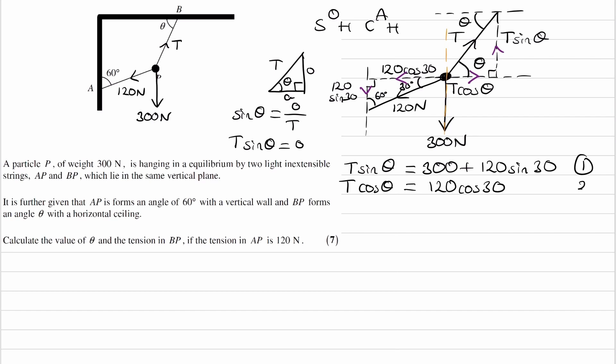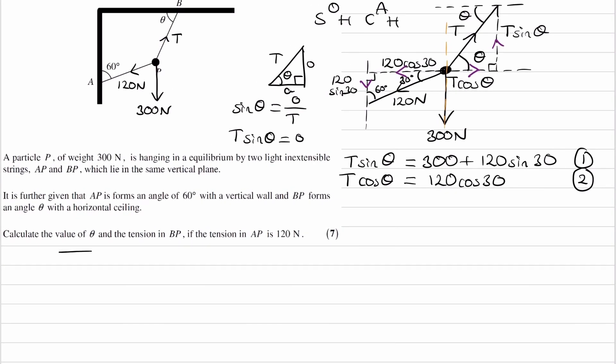So those are our two equations, and from these two, we're going to be solving them simultaneously to work out what theta is and to work out what tension T is. The easiest way that we can do that is to divide the two equations.